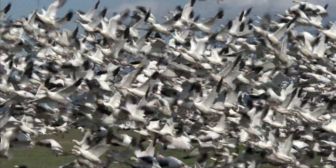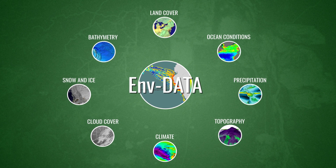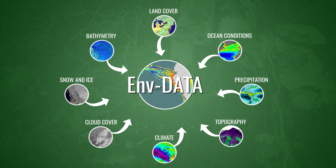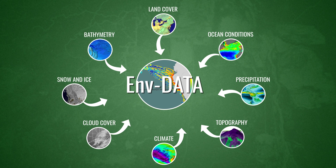One tool we offer in Movebank is called the Environmental Data Automated Track Annotation system, or for short ENV-DATA. This is a free service that lets researchers and the public link animal movement data to environmental information.